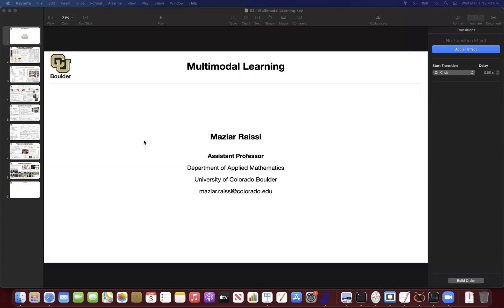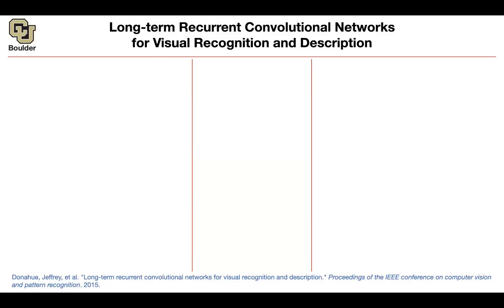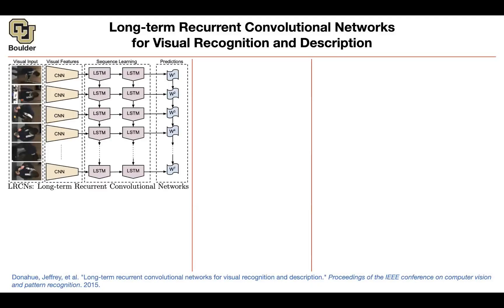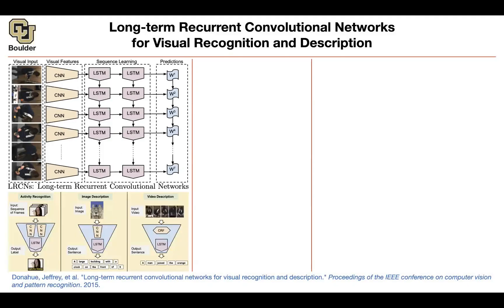We are getting a little bit more ambitious compared to what we have been doing so far, and we are taking baby steps. One of the baby steps is this paper that we started last session. It's long-term recurrent convolutional neural networks. Don't worry about this figure, I'm going to explain it more. The type of tasks we are going to start with are, for instance, activity recognition — a video goes in and you want to know the corresponding label, for instance, 'applying eye makeup.'